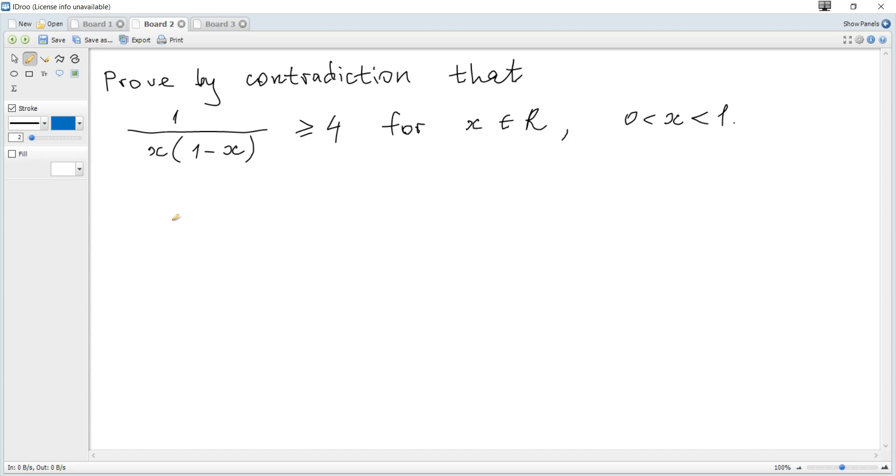Prove by contradiction that 1/(x(1-x)) ≥ 4 for x ∈ (0,1). We start with negation, so we assume 1/(x(1-x)) < 4, and we should show that a contradiction arises.